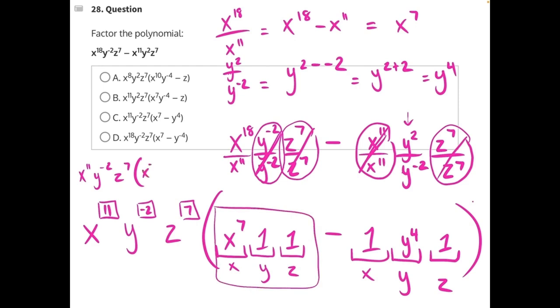Anything times 1 is just itself. So it's just x to the 7 minus, again, anything times 1 is just itself. So y to the 4 times two 1s will give us y to the 4th. And that matches answer choice C.